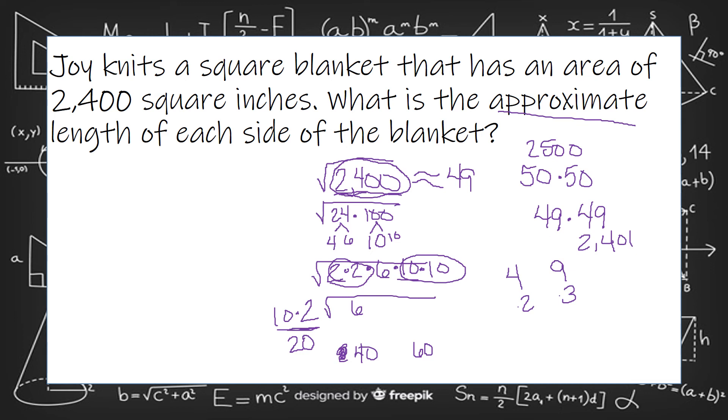2,400 and 2,401 are really close. So I could say that this is about 49. It'd be 48 point some odd. And I can always type it in my calculator as 2,400 and take the square root. And it tells me the exact answer is 48.98979. So that is really, really close to 49.